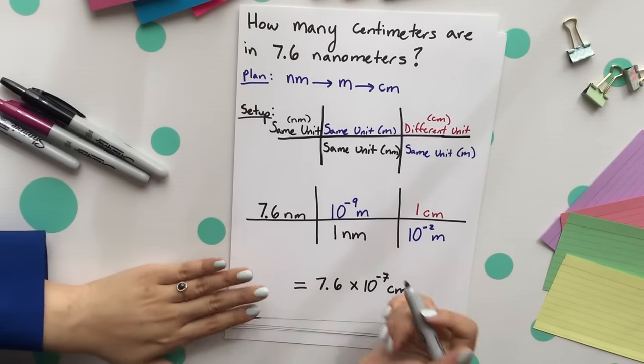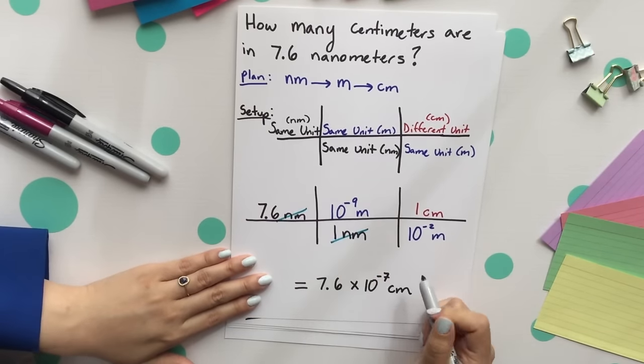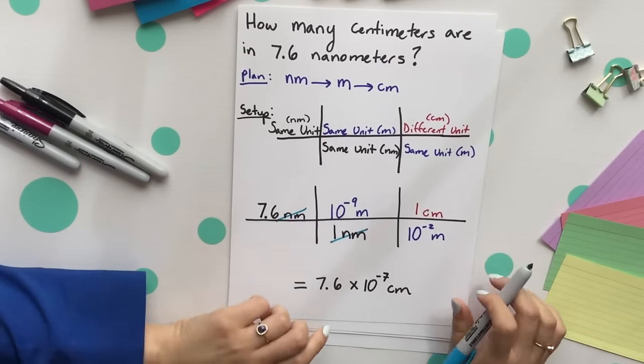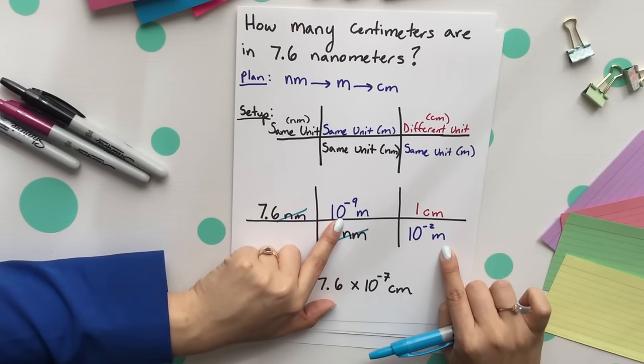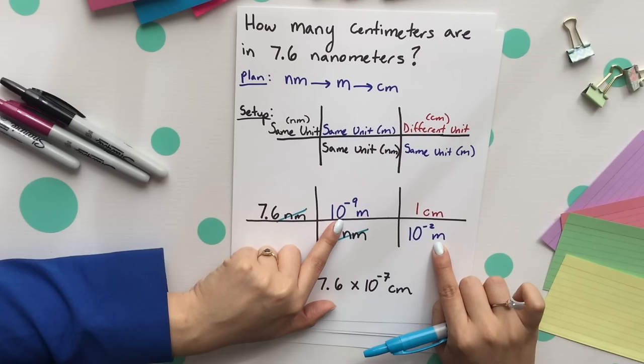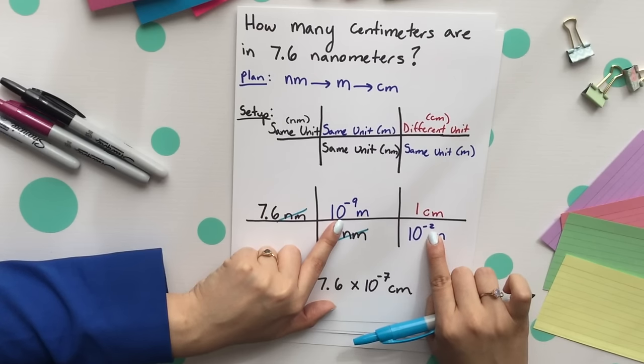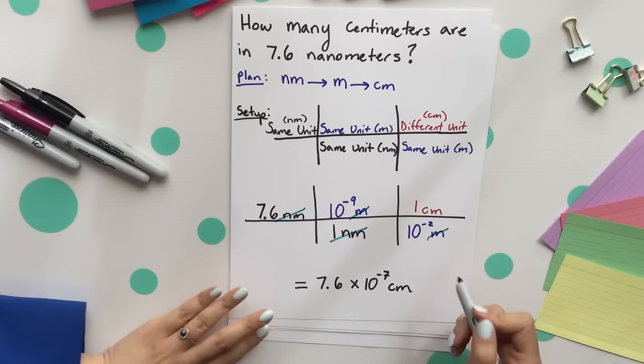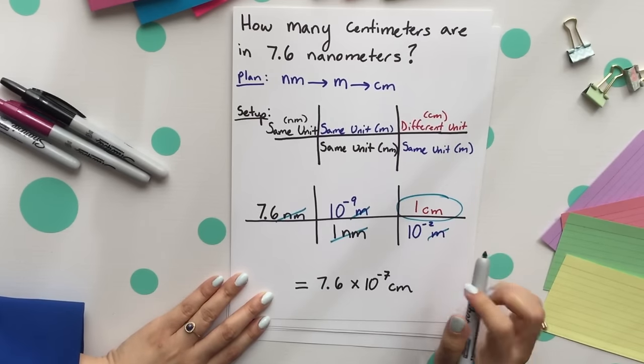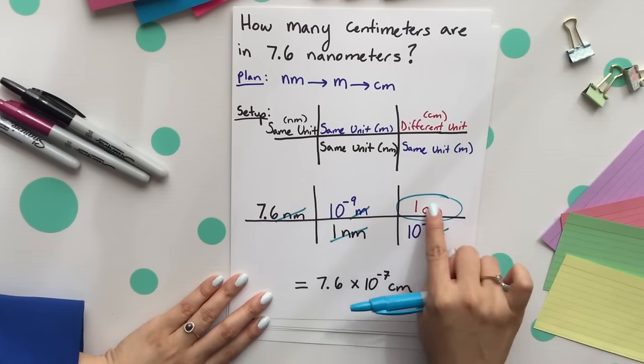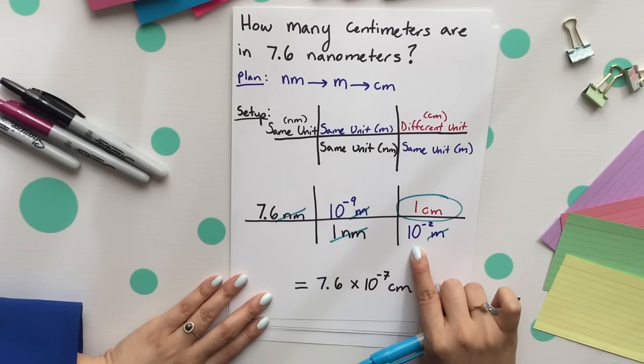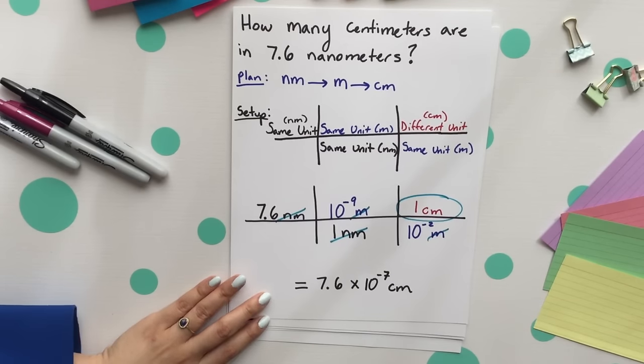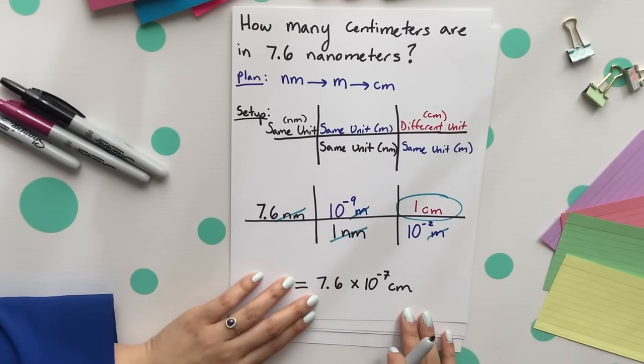Next part will be that our nanometers will cancel and our meters will also cancel because we want to place them across from each other. So our meters still being our base unit 10 to the negative 2nd will be there. Our meters would cancel and we are left with centimeters. We want to then multiply straight across and divide by 10 to the negative 2nd. Our final answer is 7.6 times 10 to the negative 7th centimeters.